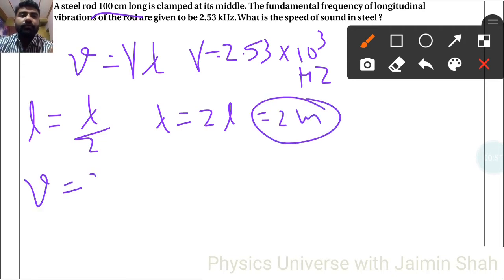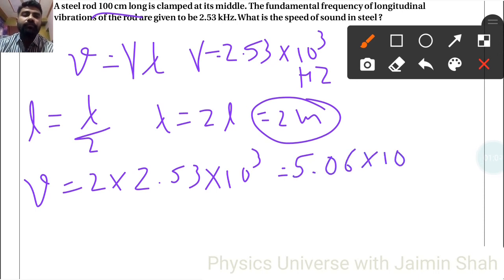So v is equal to lambda into nu. That is 2 into 2.53 into 10 raised to 3. So 2 into 2.53, that is 5.06 into 10 raised to 3 meter per second. So that is the speed of sound in steel.